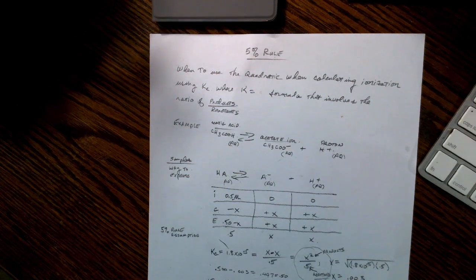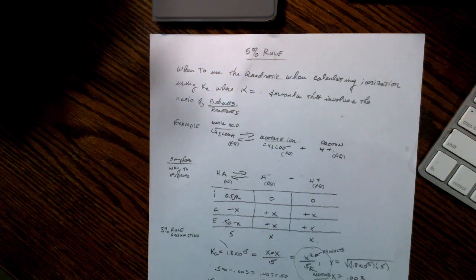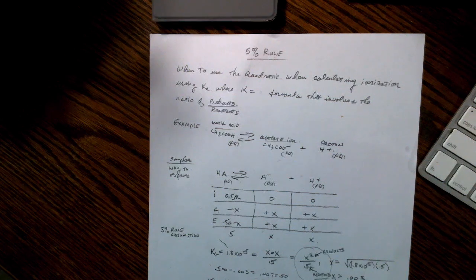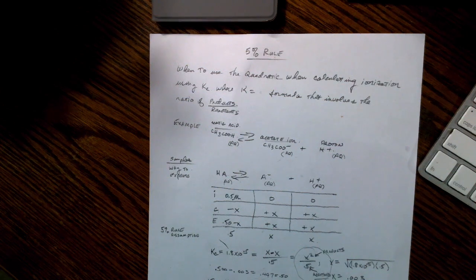So anyway, the 5% rule. We're using a simple compound, vinegar in this particular case, acetic acid, and we're going to just show you the concept. Quite often when I work with students, they get into these chapters of dealing with ionization constants and equilibrium constants, they sort of get it, but they don't know when to, when not to use the quadratic formula.